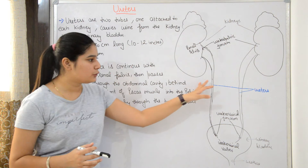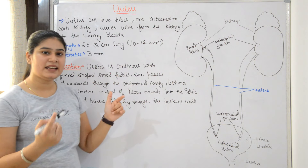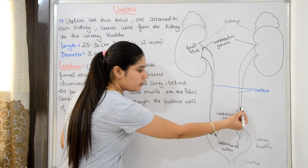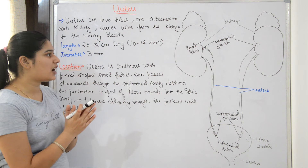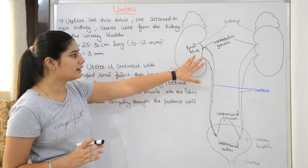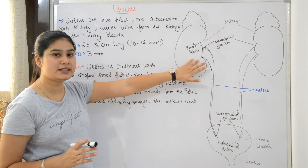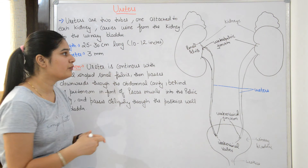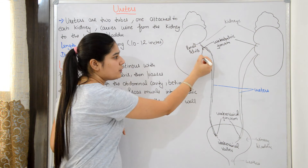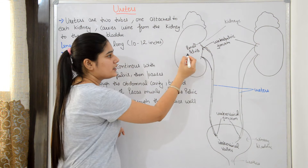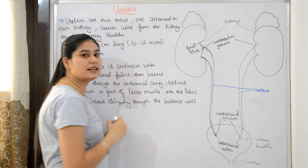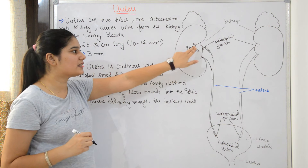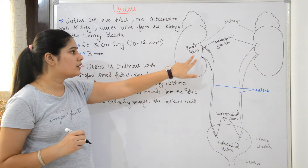The ureter's shape is roughly S-shaped because it is curved. The ureter originates from the renal pelvis, and the renal pelvis is continuous with the ureters.